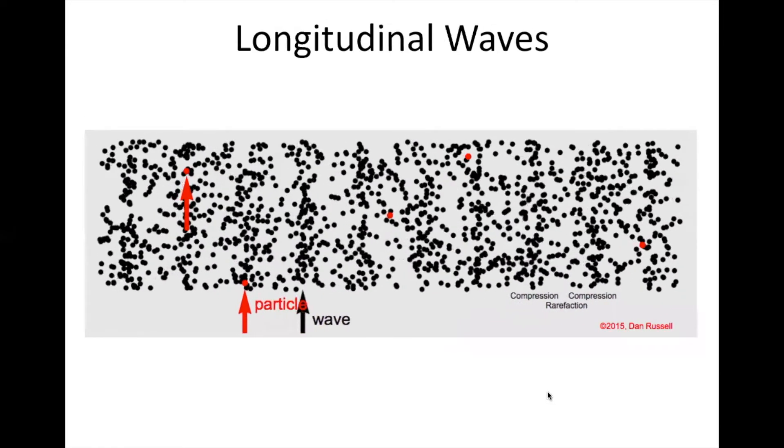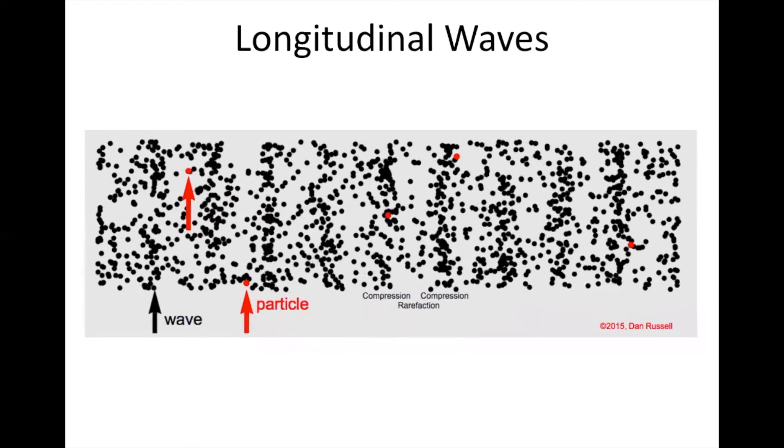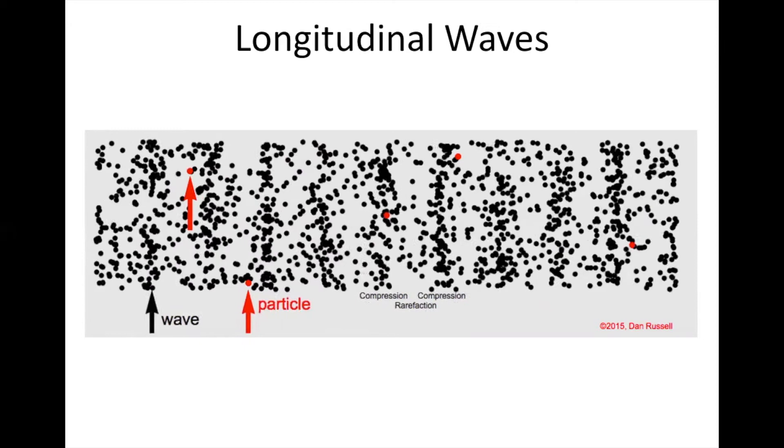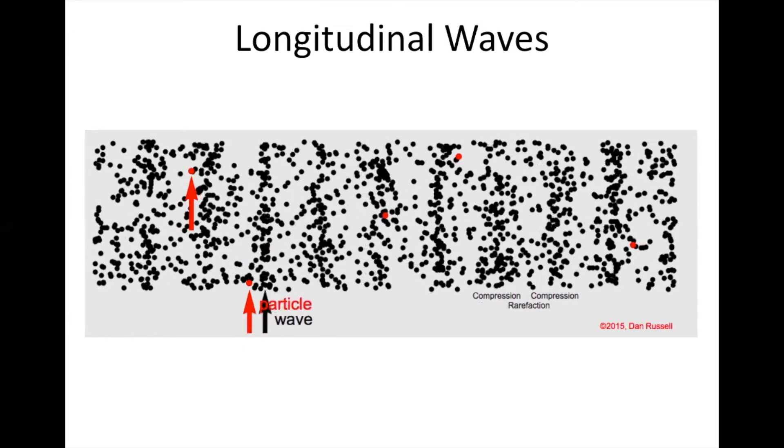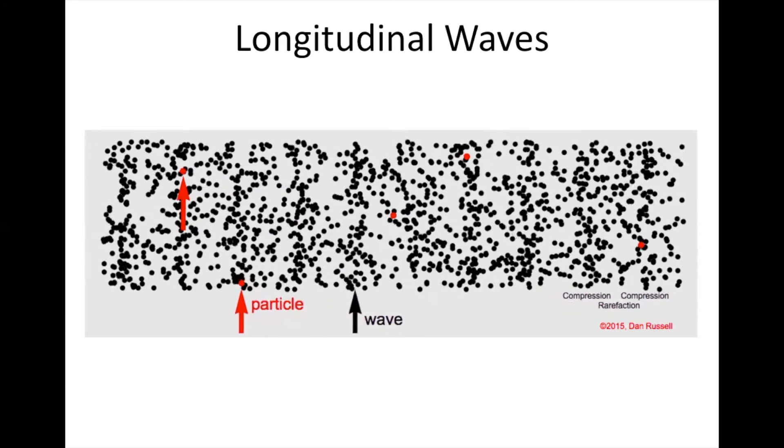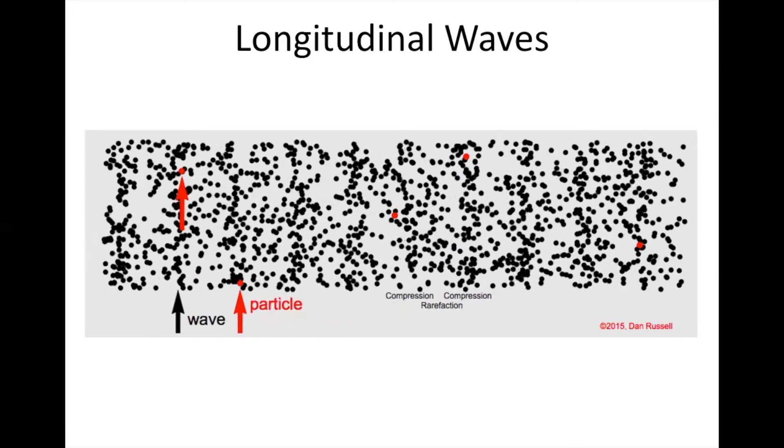In a longitudinal wave, the medium has sections of high pressure and low pressure, but I want you to pay special attention to the motion of the medium. Notice that an individual particle might move back and forth in place. An individual particle doesn't travel across the room. The medium stays in place, but the energy travels to the right.